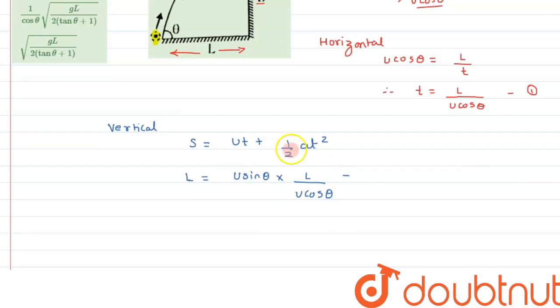And t we have just calculated it as L by u cos theta. And acceleration due to gravity, instead of acceleration we will put a minus g over here. So it can be written as half into g into t squared, that is L squared divided by u squared cos squared theta.